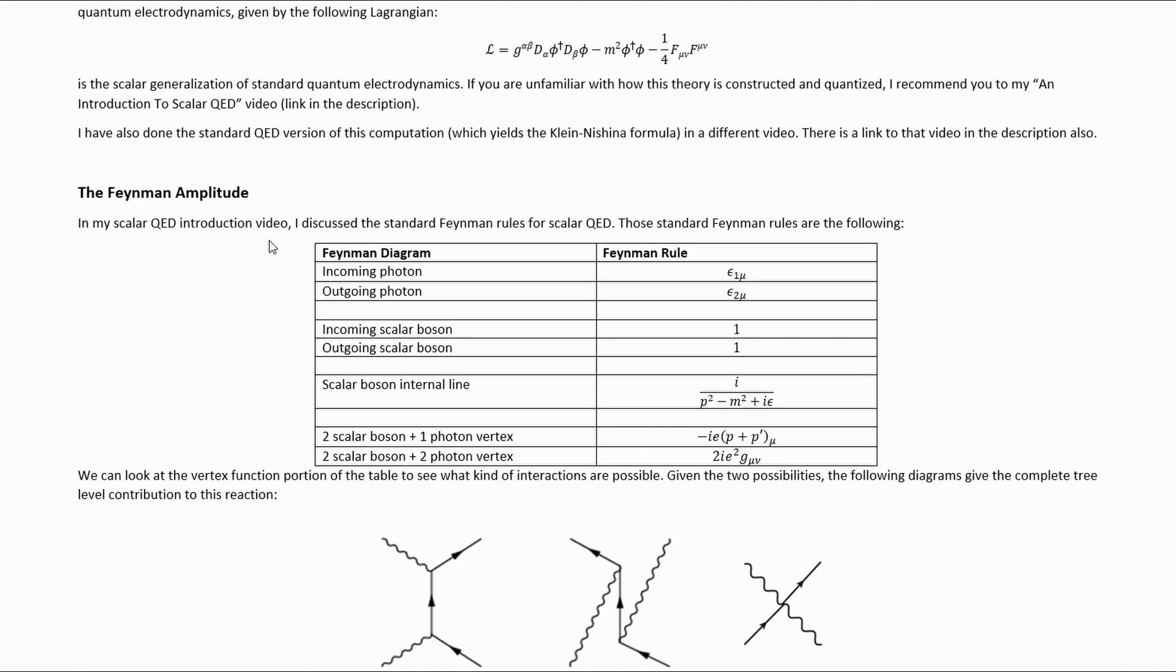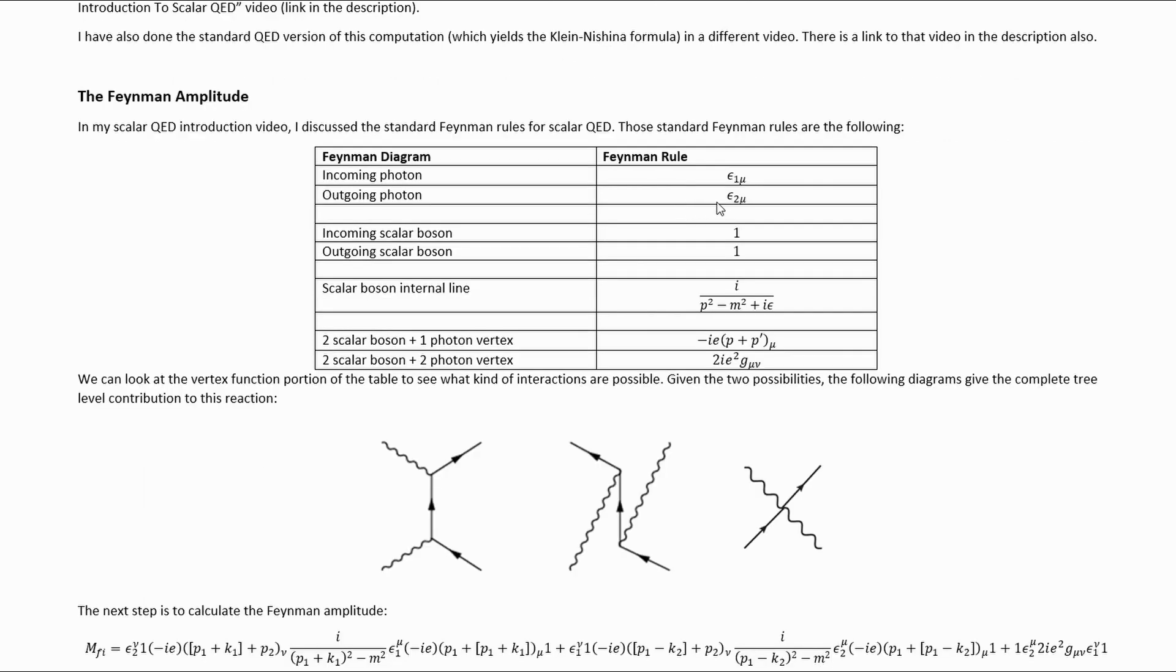In my scalar QED introduction video, I discussed the standard Feynman rules for scalar QED. Those Feynman rules are these. I've set up the photon section to make particular sense with this calculation. Because we're doing Compton scattering, I've got one incoming photon and one outgoing photon, and so we need two polarization vector Feynman rules that are denoted differently. But because they're both external photon lines, the basic form of the Feynman rule is the same.